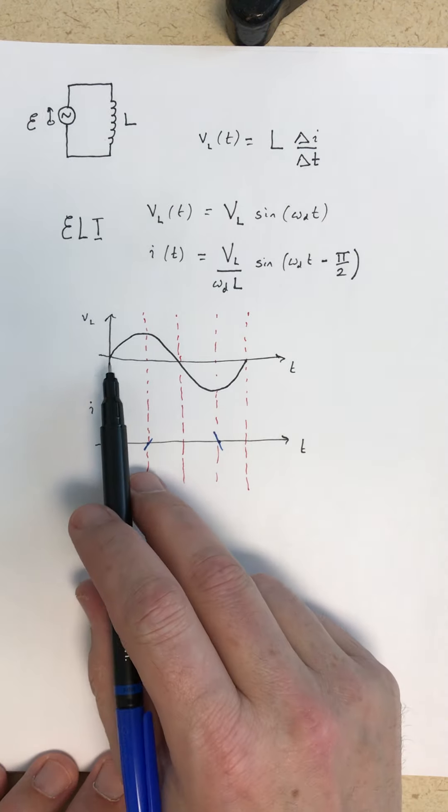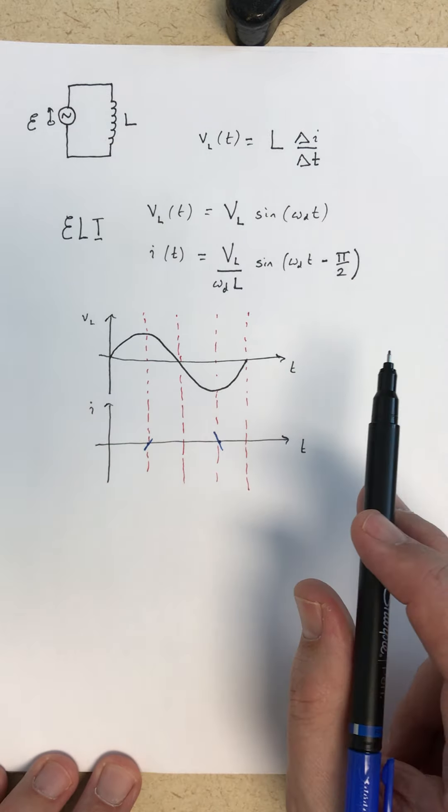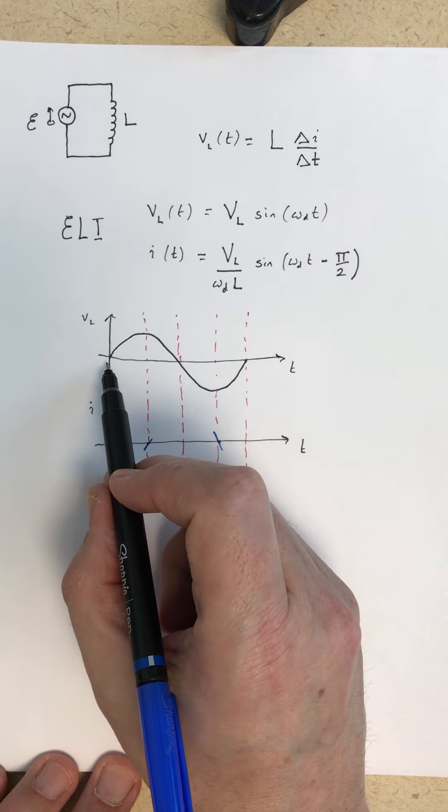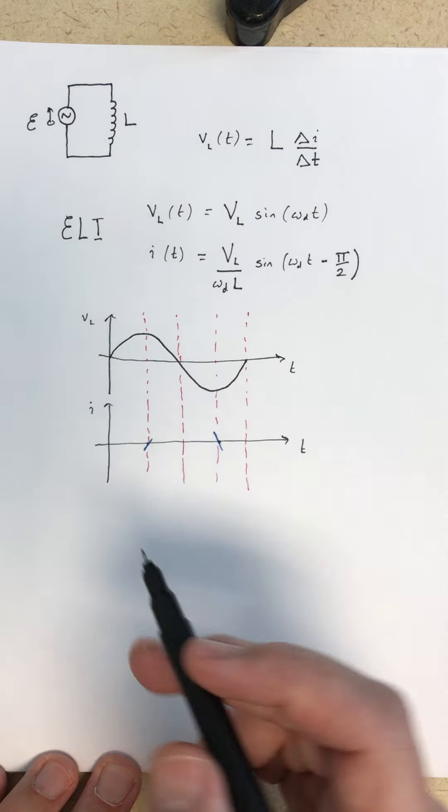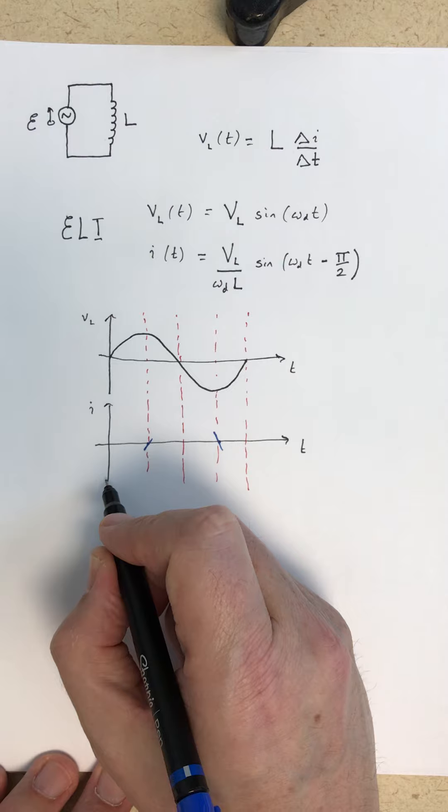So now when the voltage is zero, we're going to see how those points lie. This initial point, when t equals zero, the voltage is zero because the current has no slope at that time.